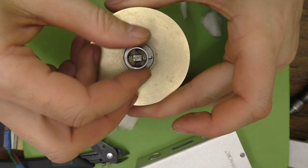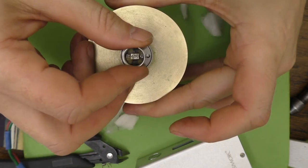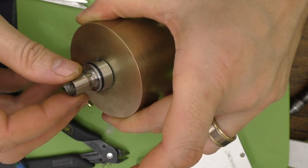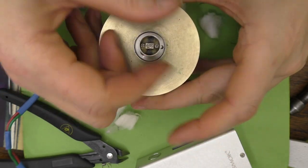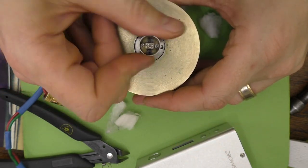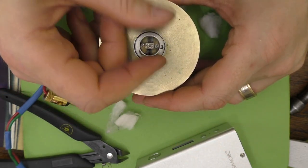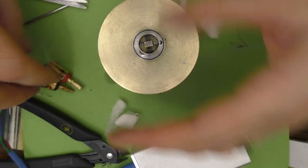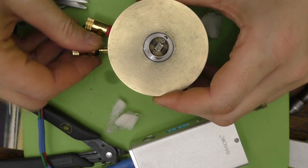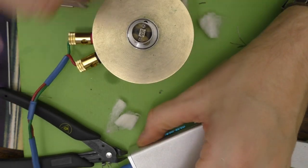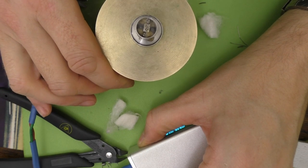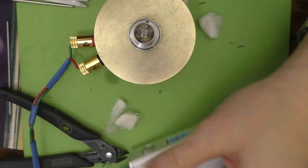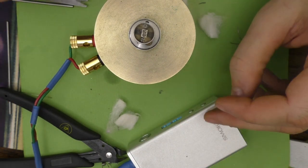And then you just basically check that I had the writing the right way up because it will screw on both ways around. And not that it matters, but you want it to be the right way up. Screw that down. I'm just going to quickly check that I haven't created any shorts or hot spots or anything. That seems to be going well. Yeah, lovely.